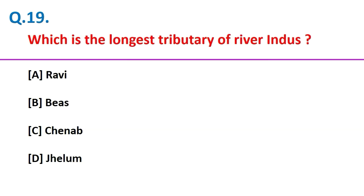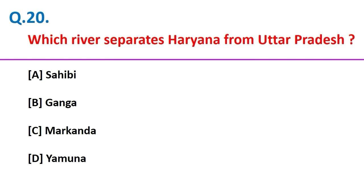Which is the longest tributary of River Indus? Chenab. Which river separates Haryana from Uttar Pradesh? Yamuna.